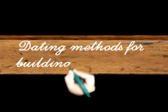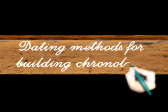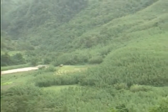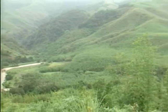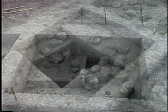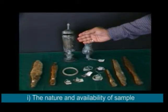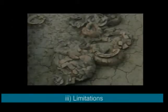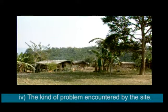Now let us turn to the dating methods for building chronology. There are specific methods used at each site for determining chronology. In applying the dating methods at a particular site, it is important to consider a number of factors: number one, the nature and availability of the sample; number two, the purposes; number three, the limitations; and number four, the kind of problem encountered at the site.